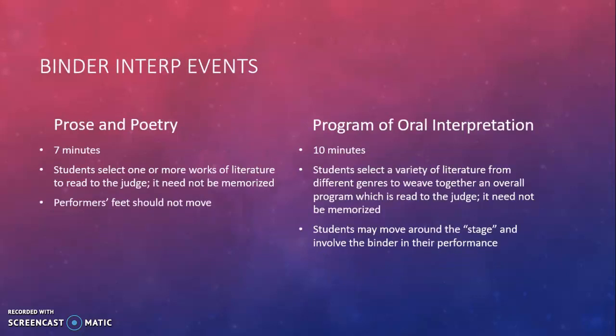A few of the interpretation events are read directly from a small binder. In prose and poetry, the presentation can be up to seven minutes long, and students are selecting one or more works of literature that fit within either the prose or poetry genre. Because they're reading out of the binder, the presentation does not need to be memorized. However, especially later in the season, students often seem like they have the piece pretty well down, since they've been giving the same presentation many times. In prose and poetry, there is only one rule about movement: the performer's feet should not move, though other blocking is permitted.